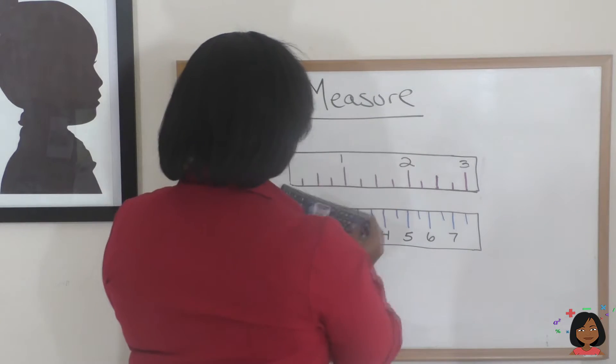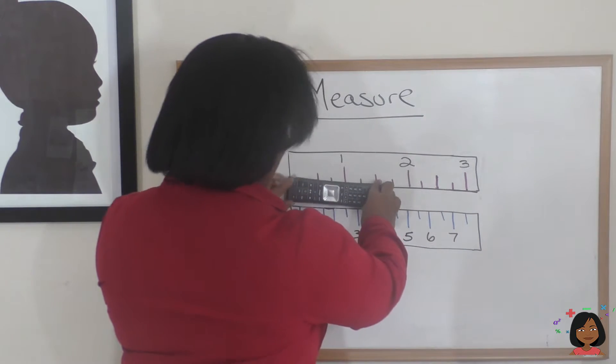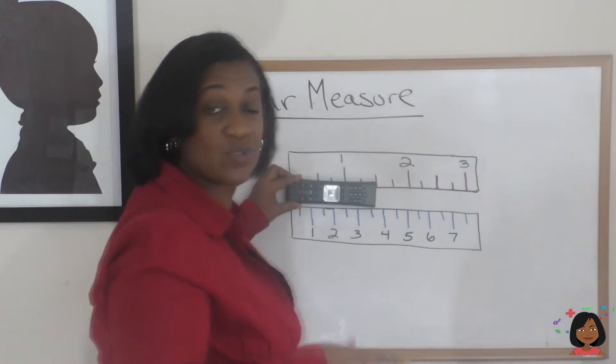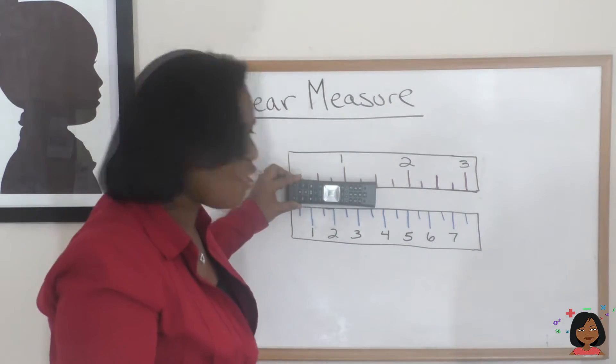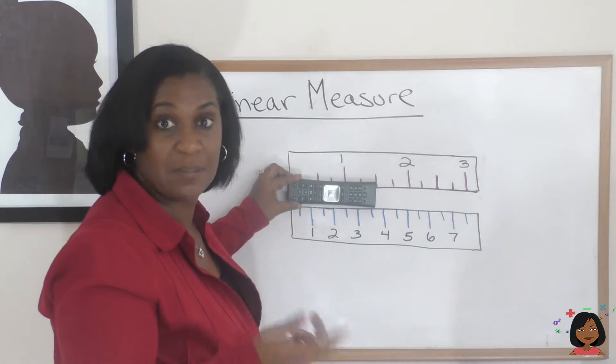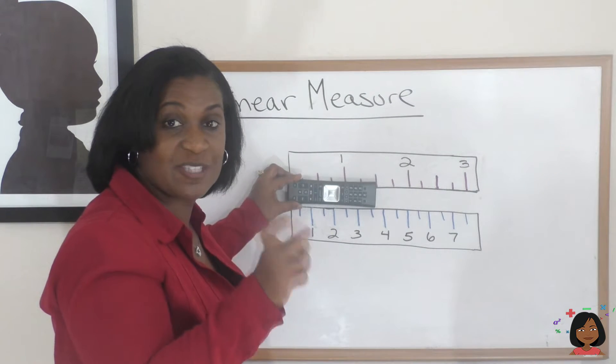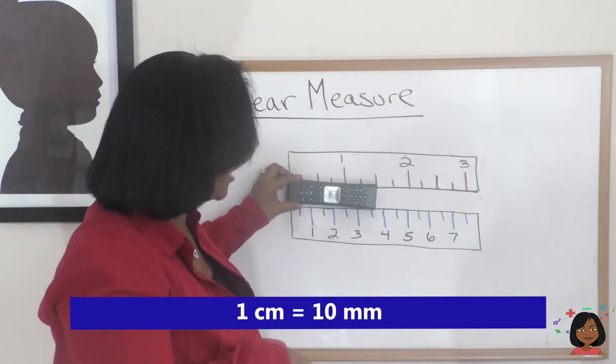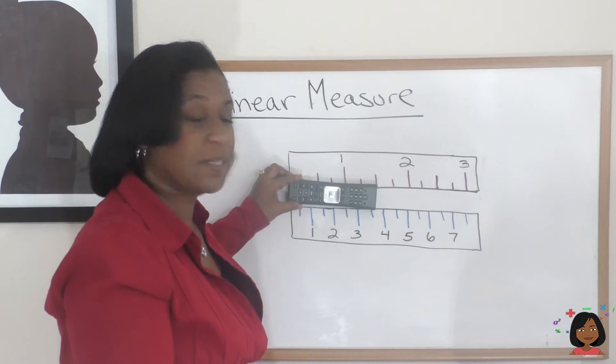How many centimeters do we think it is? It's about three and a half centimeters, or I could say it's about 37 millimeters. That is the smaller scale. It actually means that one centimeter has 10 millimeters. I'd say about maybe 37 millimeters.